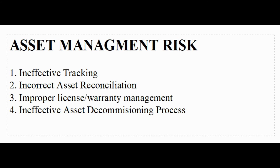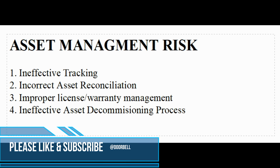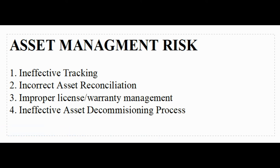Ineffective tracking matters because it helps you save money — if assets are not properly reconciled, you end up paying extra for services you have not been using. The next common risk is incorrect asset reconciliation, which acts as a detective mechanism to the first risk. Following that is improper license or warranty management: licenses and warranties need to be tracked on a timely basis. Otherwise, the software or services you are running may run out of licenses, disrupting your business — or you may keep paying for licenses you are no longer using.